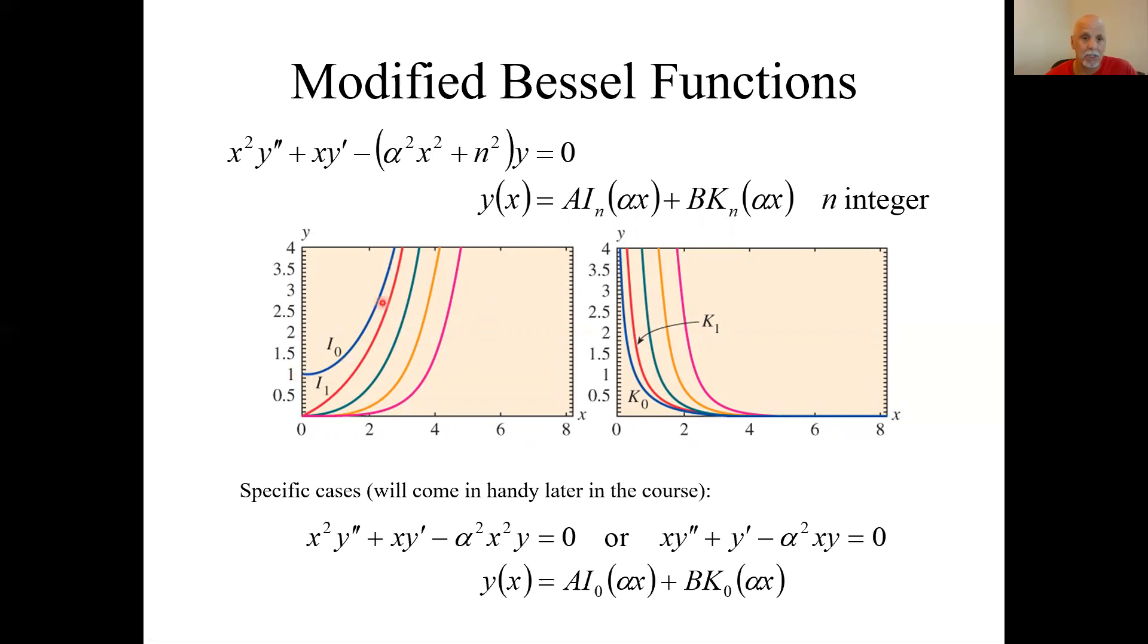They look like this. Again, we're really only going to be interested in the nu equals 0 or n equals 0 cases. But in this case, notice that they don't oscillate about the x-axis. And they're unbounded at different extremes. Modified Bessel function of the first kind is unbounded as x approaches infinity. Those features will be needed later in the course.